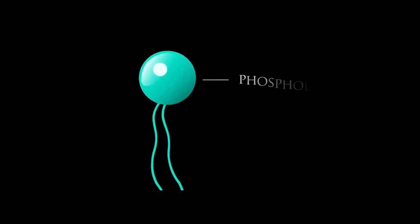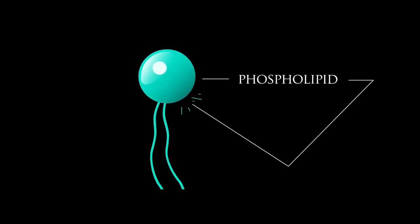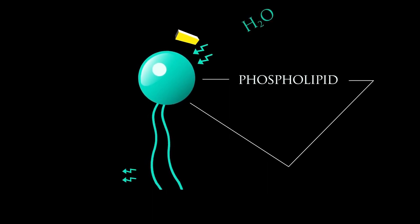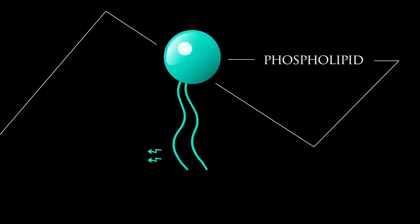The primary component of the fluid mosaic is a simple molecule called a phospholipid. A phospholipid has a polar, electrically charged head which attracts water, and a non-polar tail which repels it.